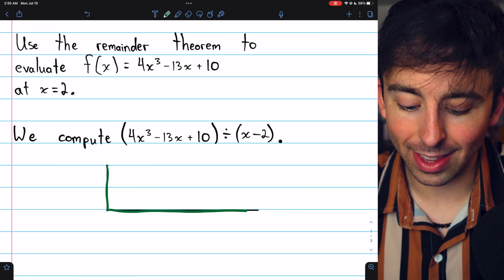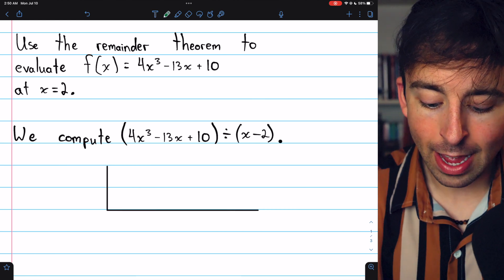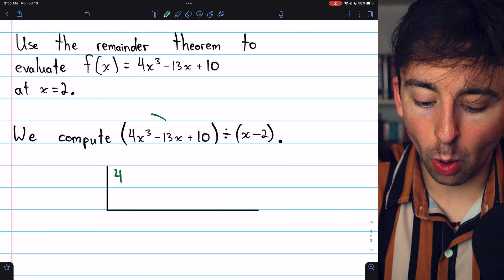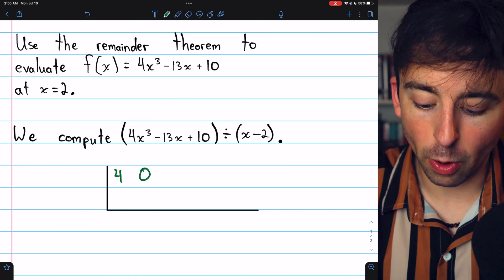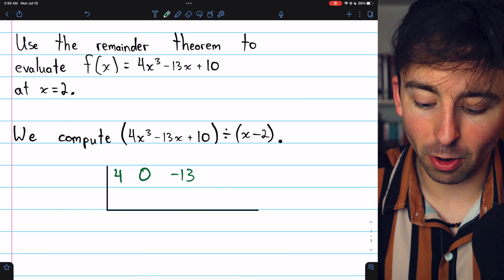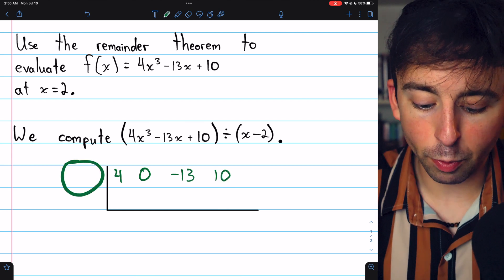So, we set up our synthetic division, which begins with a rectangle like that that's two rows high. In the first row, we put the coefficients of our polynomial: 4x cubed, 0x squared, minus 13x, and a constant of 10.